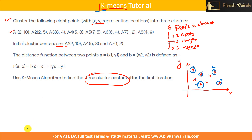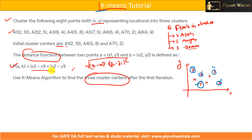Same concept we are going to apply in this question. Eight points are given, three clusters are given. The distance function between two points is given — this is simple Manhattan distance. In some questions, they can also give Euclidean distance: √((x1−x2)² + (y1−y2)²). Use Manhattan distance when specified, or Euclidean distance when mentioned. So we need to find the distance between each point and the centers — distance of a1 to a1, a1 to a4, a1 to a7, because these are the initial clusters assumed for the first iteration.